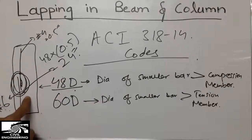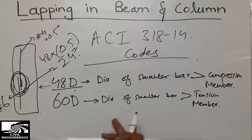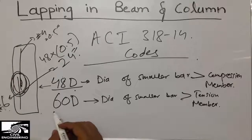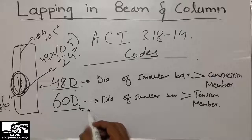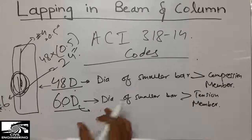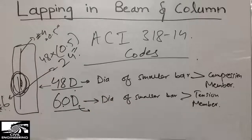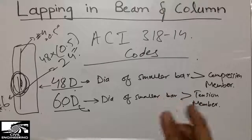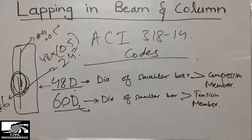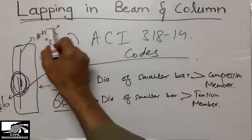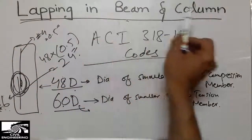Similarly for the beam, which is a tension member, we provide a lapping length of 60d, where d is the diameter of the smaller bar multiplied by 60. This gives the minimum lapping length for beams. So this was all about lapping in beams as well as in columns.